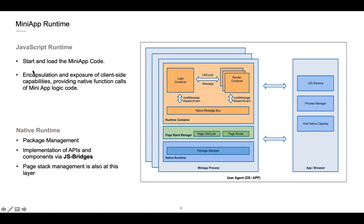The JS runtime layer is responsible for: loading and unloading the render code, exposing client-side capabilities, providing native function calls, and running the MiniApp logic code. The native runtime layer contains the package manager part and the page stack management part, and supports APIs via JS bridge technology. Every MiniApp can run in a single process besides the user agent processes.